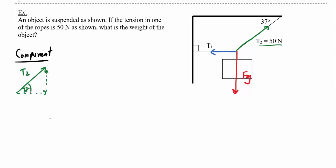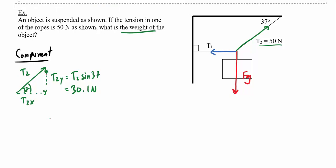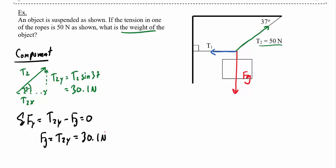With a 37 degree angle, T2y equals T2 times sine of 37 degrees, which is 30.1 Newtons. Since we're trying to find the weight of the sign, and T1 isn't providing any y force at all, the sum of y forces is just T2y minus Fg equals zero. Therefore Fg equals T2y, which is 30.1 Newtons.